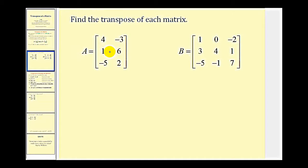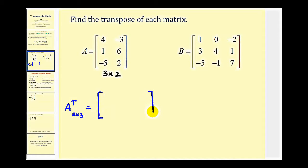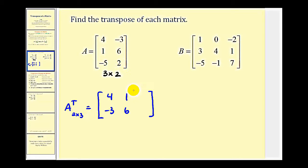I always like to start with the dimensions. Notice matrix A is a three by two matrix, so the transpose of matrix A will be a two by three matrix. I'm going to go through each row in matrix A and make it the corresponding column in the transpose. Since row one has elements four and negative three, column one in the transpose will have elements four and negative three. Row two has elements one and six, so column two will have elements one and six.